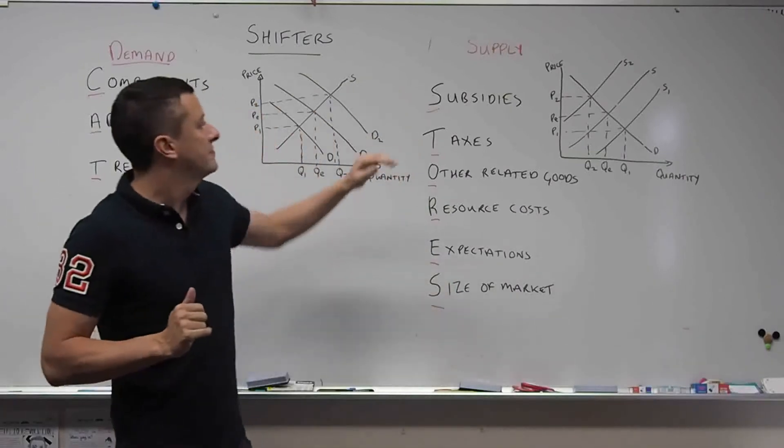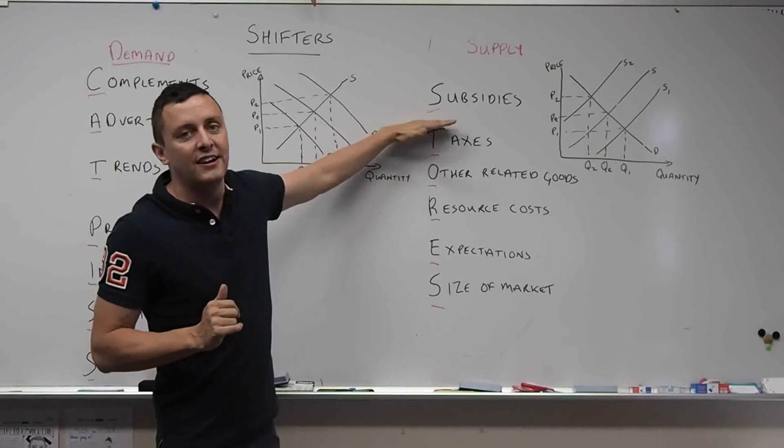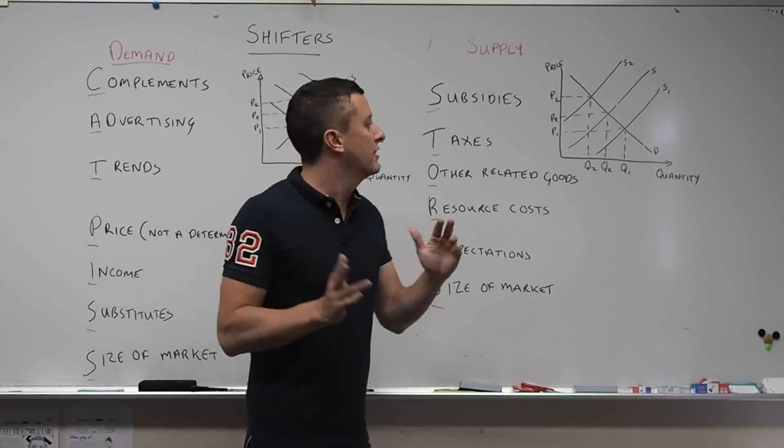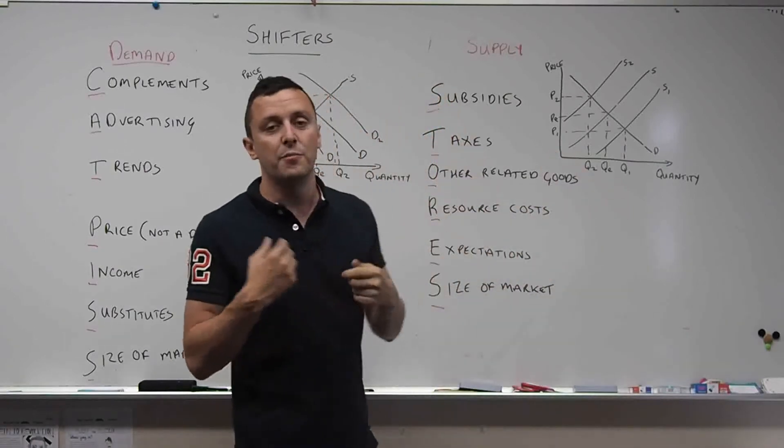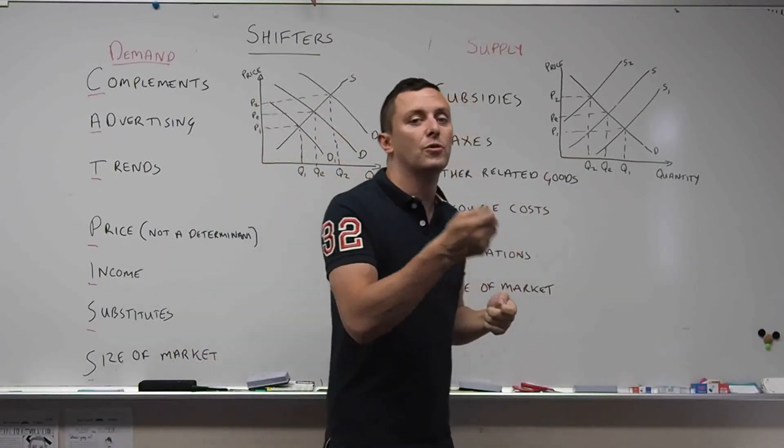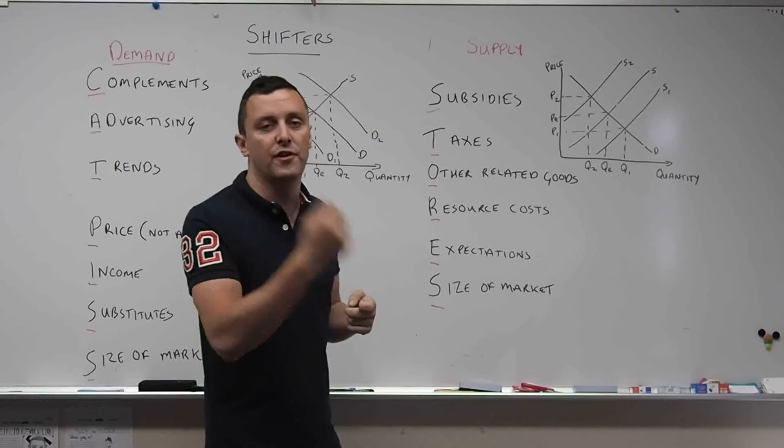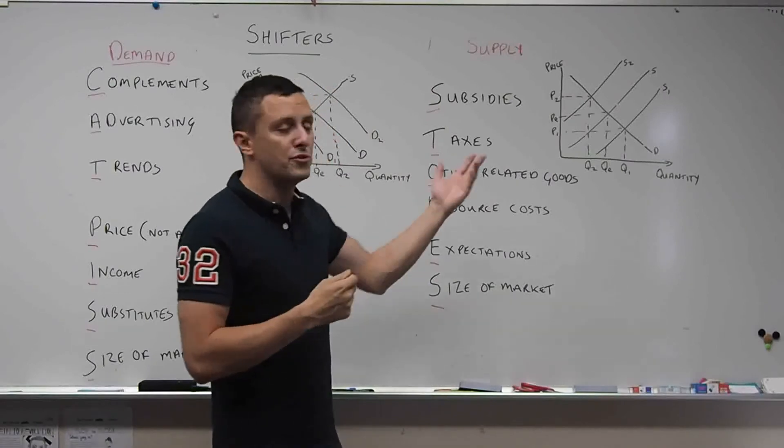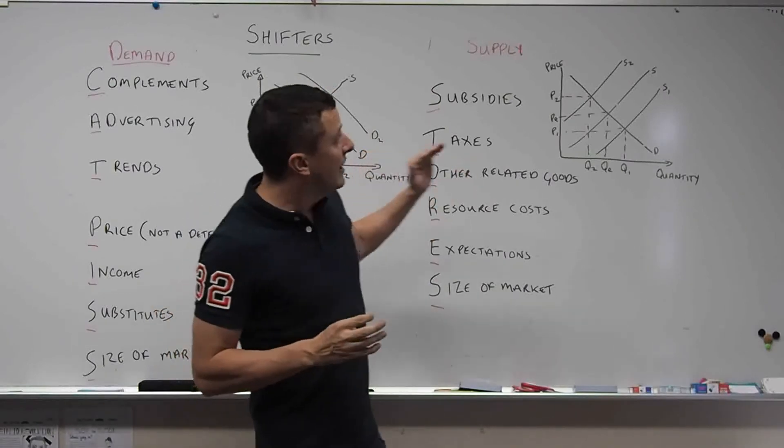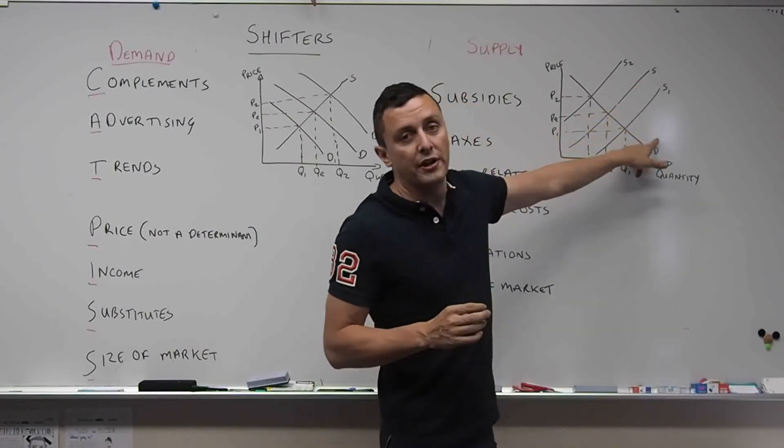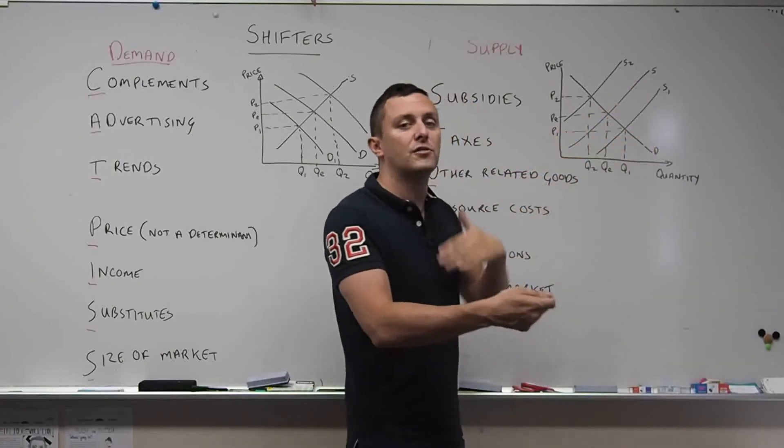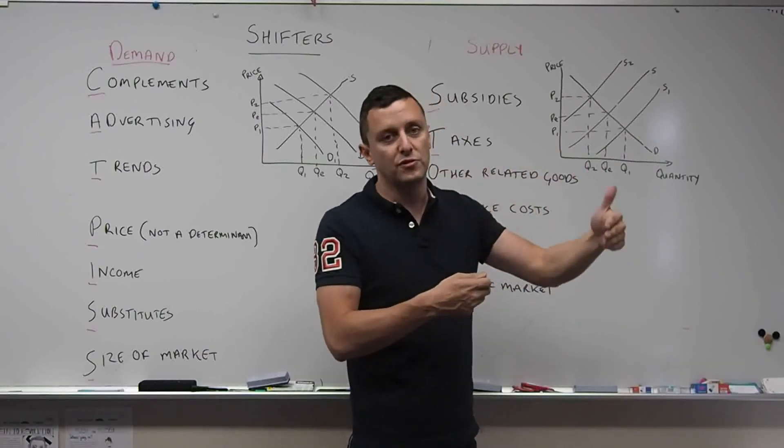First one, subsidies. So subsidies, you should know from your classes, will increase supply. Subsidies are money given from the government to a corporation or a farm or whatever, or a producer. And that should shift the curve, the S curve to S1 because they're giving them money to produce more goods and they're able to produce goods more cheaply.